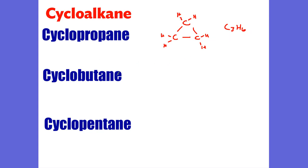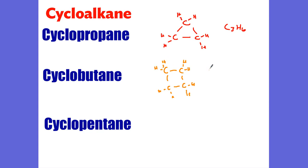So let's go to cyclobutane. Butane is four carbons, and it's going to be in a cyclical form. Each carbon is going to have two hydrogens coming off. The chemical formula for this one is C4H8.